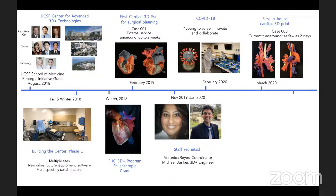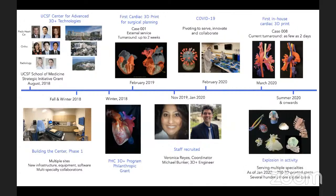Progress was interrupted by COVID-19 in February 2020, requiring a rapid pivot. The team continued working on cardiac modeling, and by March 2020 had printed their first in-house cardiac case — case number eight overall — with a turnaround time now as low as two days. As San Francisco improved through summer 2020, the hospital resumed elective cases at full capacity.